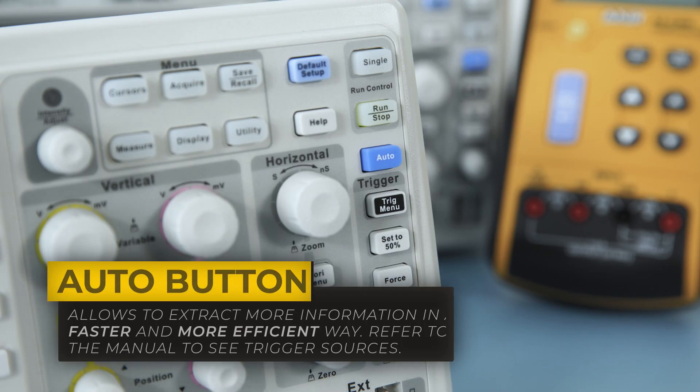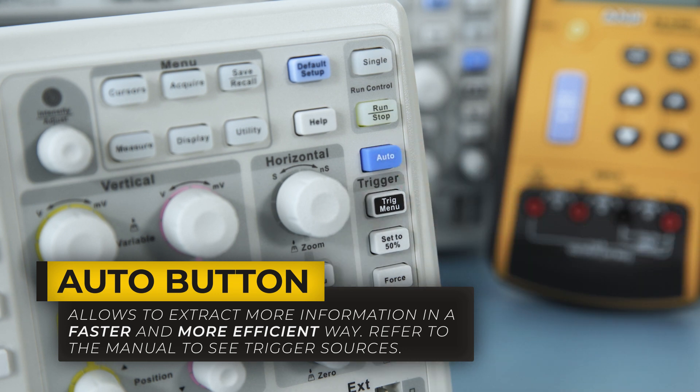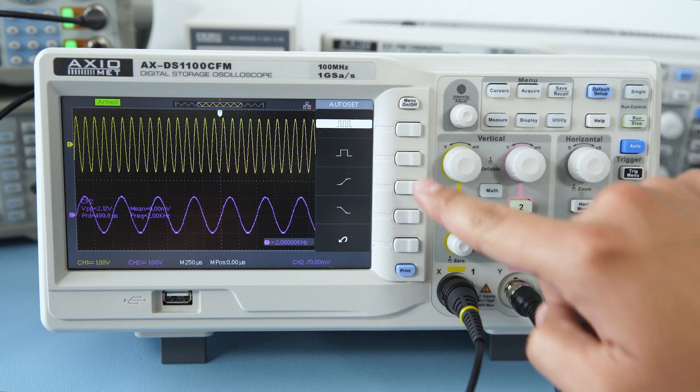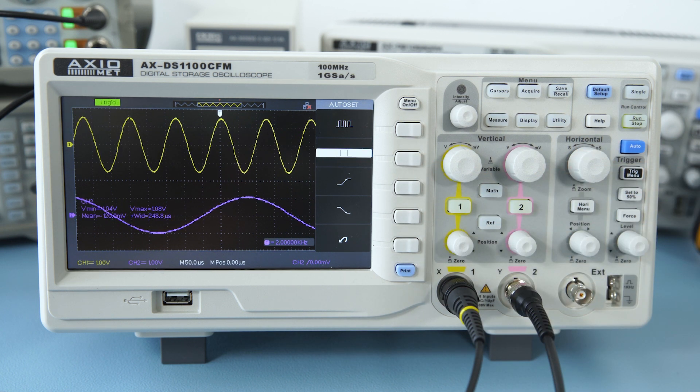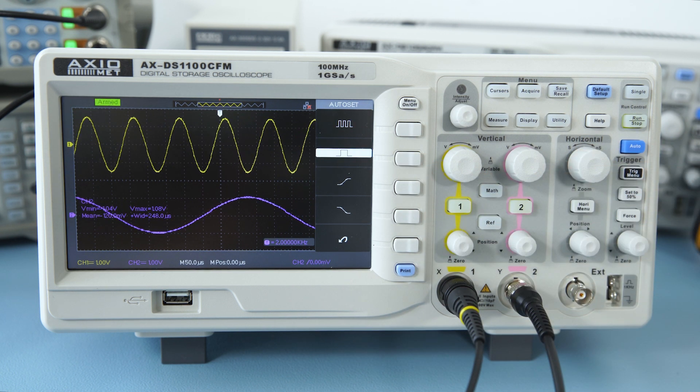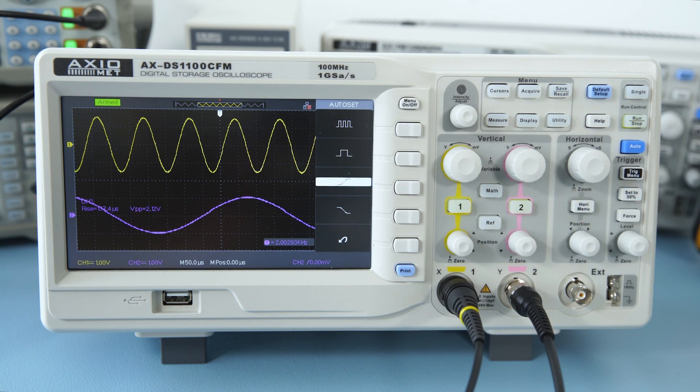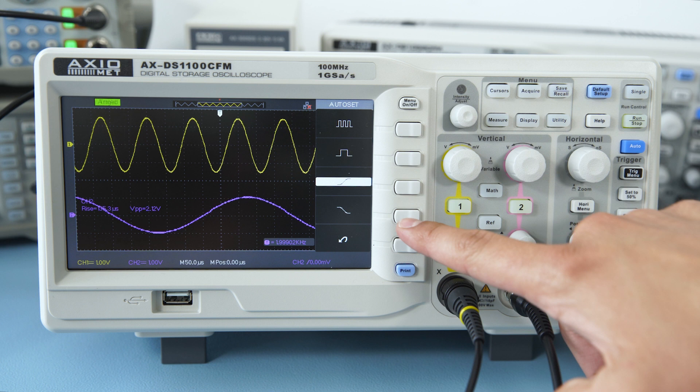In order to extract more information in a faster and more efficient way, press the Auto button. The Oscilloscope will automatically detect the optimal vertical and horizontal scales for both channels and will display a readable signal. Moreover, it can display just a single cycle over its rising or falling edges.